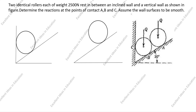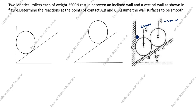Welcome to my channel, Excellent Ideas in Education. Today we are going to solve this engineering dynamics problem. This is a very important problem: two identical rollers, each of weight 2500 Newton, rest in between an inclined wall. The inclination angle is given as 30 degrees and a vertical wall as shown in the figure. Determine the reactions at the points of contact A, B, and C. Assume the wall surfaces to be smooth.